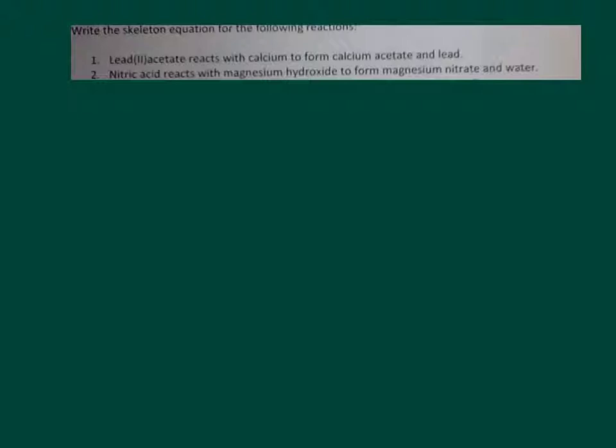For number two, we have nitric acid. That's one of the formulas we were supposed to memorize. It is HNO3. Reacts with magnesium hydroxide. Here's magnesium. Hydroxide's on the back of your periodic table. It's OH. The charge on that is a minus one. Magnesium's in group two. It's a plus two. They don't cancel out, so we have to crisscross, bring that two down on the outside, and let's get rid of these charges right here.